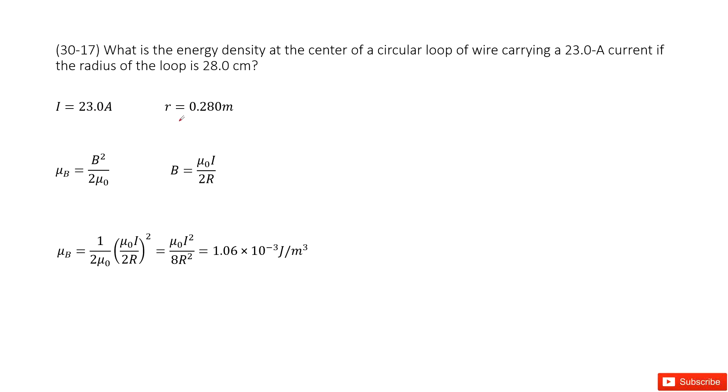As we learned in this chapter, we can write down the energy density for the magnetic field easily. Because this is a circular loop of wire carrying current, at the center there must be the magnetic field density, right?